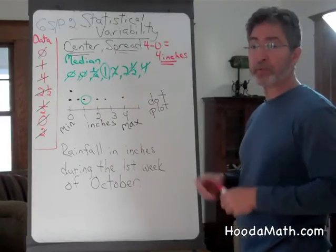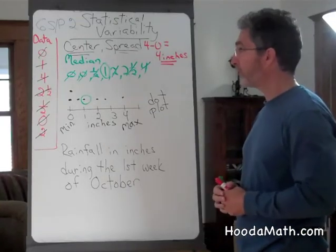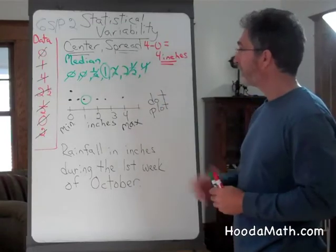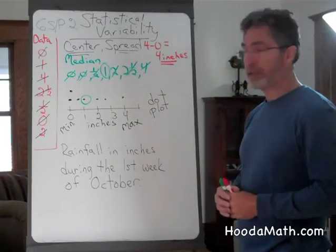Statistical variability could be shown a variety of ways. We've learned about the center, the spread, and a dot plot.